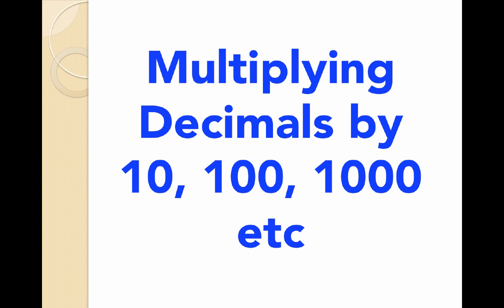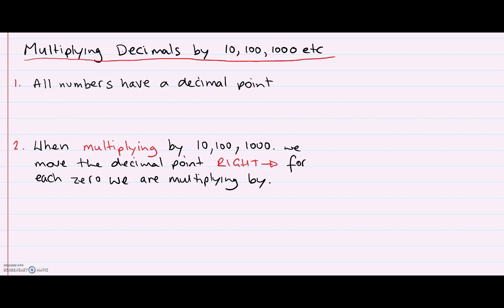So let's take a look. There's a few things we need to know when multiplying decimals by ten, hundred, or a thousand. The first one is that all numbers have a decimal point, even if they're not written with one.